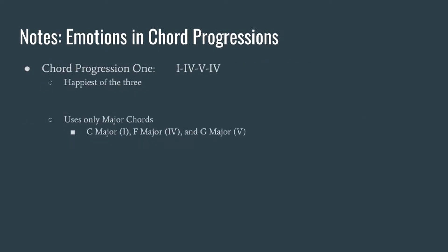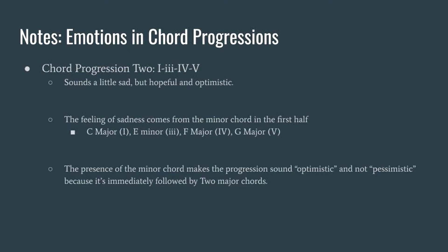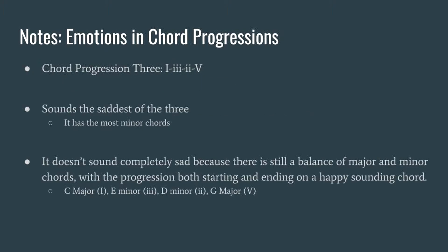This first chord progression sounds the happiest because it consists entirely of major chords — it only uses C major, F major, and then G major. The second chord progression gets its melancholy feeling from the one minor chord that sits in there, but it maintains its hopeful feel because the minor chord is immediately followed by two major chords. The final chord progression sounds the saddest because it has the most minor chords — it splits the ratio evenly between two major chords, one on each end, and two minor chords in the middle.